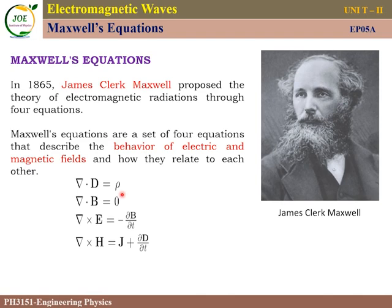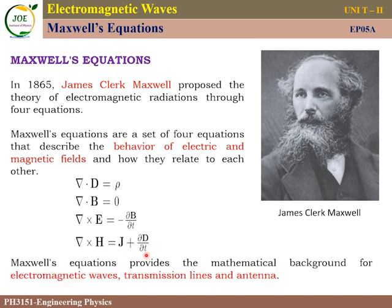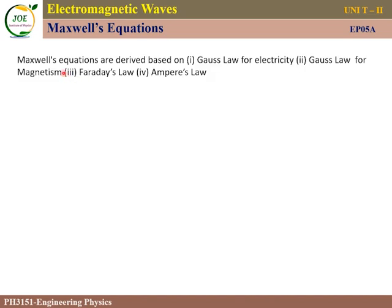The four Maxwell equations are: del dot D equals rho; del dot B equals zero; del cross E equals minus dou B by dou t; and del cross H equals J vector plus dou D by dou t. These equations correspond to: Gauss law for electricity, Gauss law for magnetism, Faraday's law, and Ampere's law.